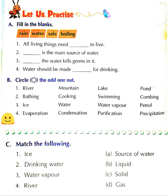Fourth is: evaporation, condensation, purification, and precipitation. Evaporation, condensation, and precipitation are all parts of the water cycle. While purification is completely different. So you have to circle out purification.